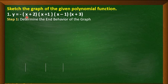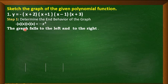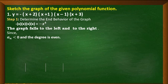Since the function is in factored form, we multiply the first term of every factor. We copy the negative sign, then multiply x · x · x · x, giving us −x⁴ as our leading term. Since the leading coefficient is −1 (less than 0) and the degree is 4 (an even number), this is the fourth case: the graph falls to the left and to the right.